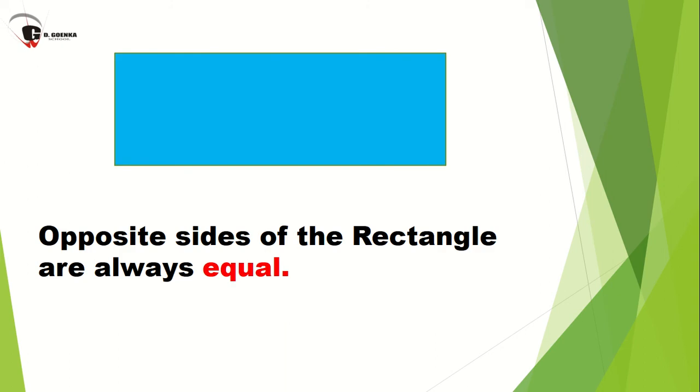Now opposite sides of the rectangle are always equal. So children, remember the opposite sides of the rectangle are always equal. As you can see in this picture, this side is equal to this side and this side is equal to this side.